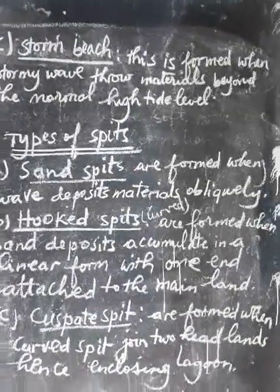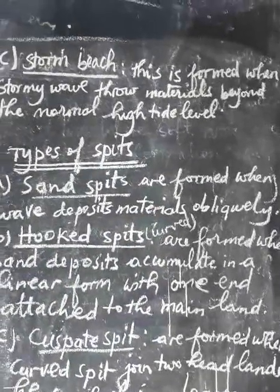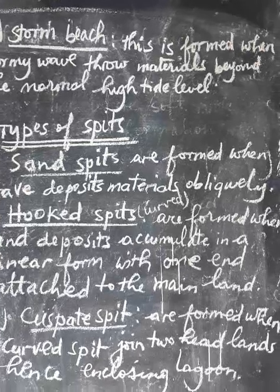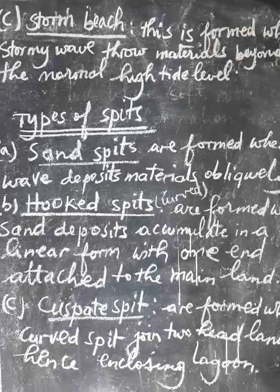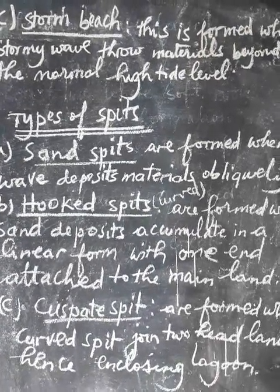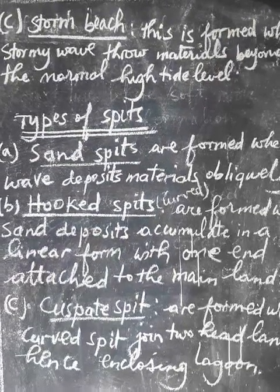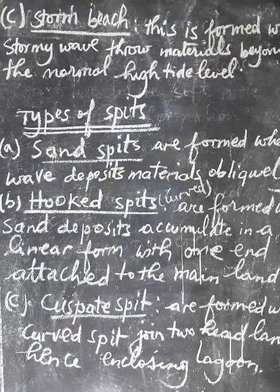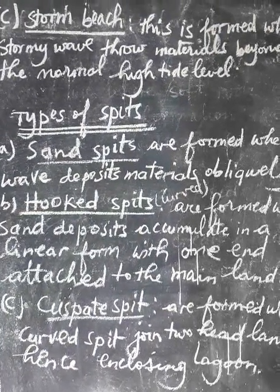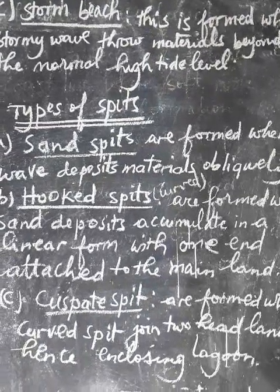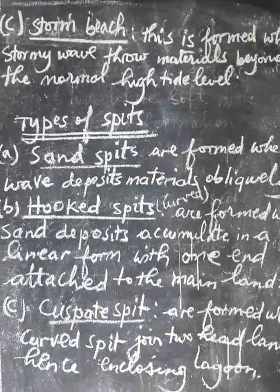Type number three is a storm beach. A storm beach is formed when a storm wave throws material beyond the normal high tide level. When a strong wave comes toward the coast, it throws those materials transported by itself beyond the normal high tide level, and this leads to the formation of a storm beach where sand deposits accumulate at a high tide level.